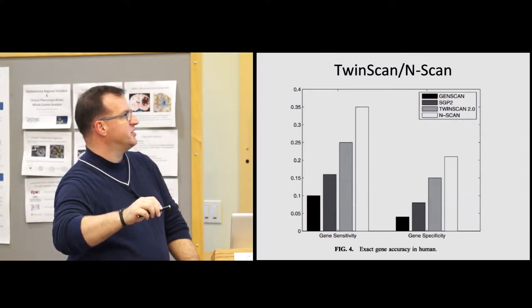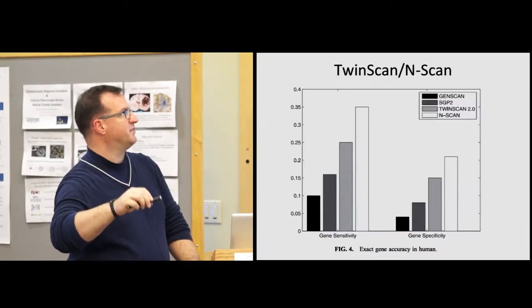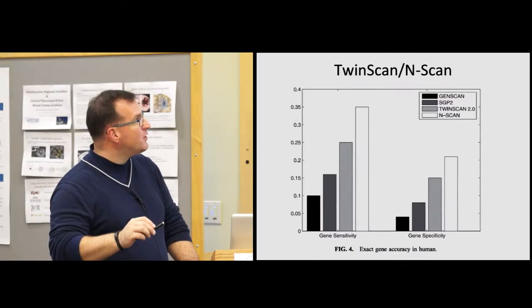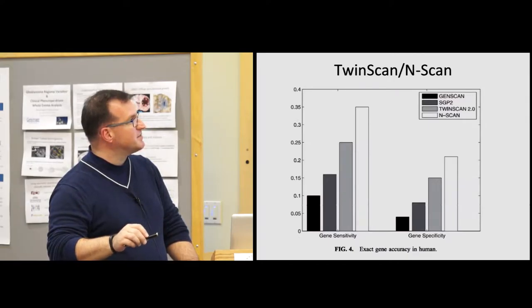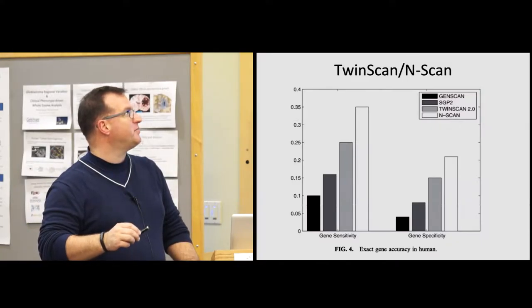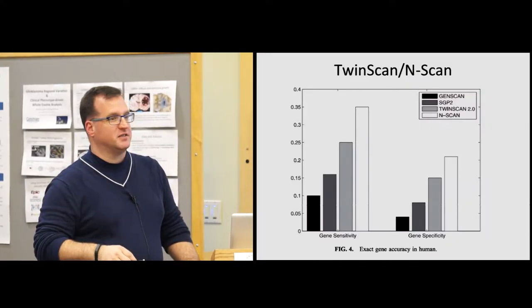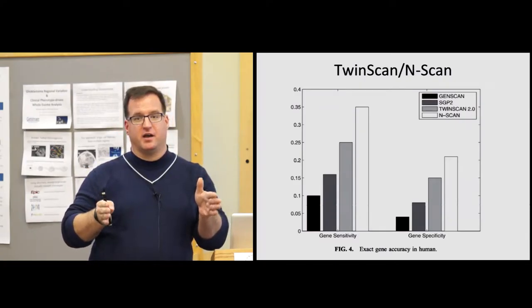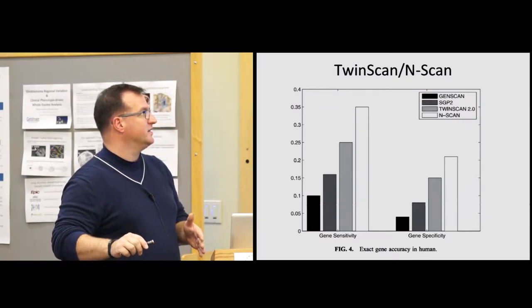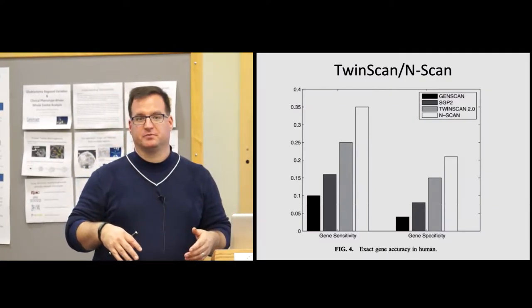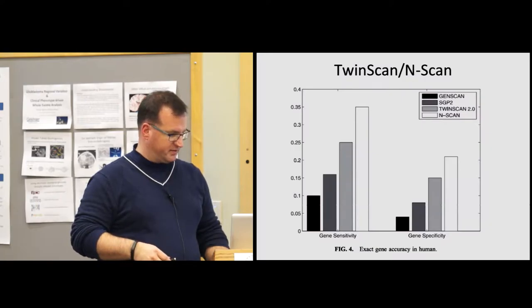And you can see as you go from GenScan, the sensitivity and the specificity for these things increase quite a bit as you go from twin scan to n scan. Note, however, that these sensitivity scores and specificity scores are still really bad. 30% sensitivity. So 30% of the exon intron boundaries that are correct are being found. And 20% of the things that are found are actually true. So sensitive versus specificity.